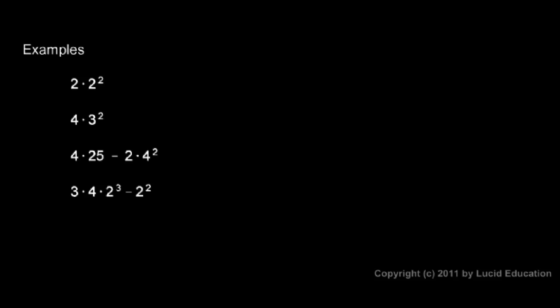Okay, this first example, 2 times 2 squared. We do the exponent first. That 2 squared right there can be replaced with a 4, because 2 squared is 4. So instead of 2 times 2 squared, I can write 2 times 4. I've just replaced the 2 squared with a 4, because 2 squared and 4 are the same thing. And I've done the exponent. I haven't yet done the multiplication.